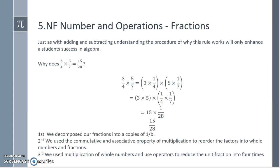So all in all, we decomposed our fractions into A copies of 1 over B, the unit fraction. We used the commutative and associative property of multiplication to reorder the factors into whole numbers and fractions. We used multiplication of whole numbers and used operators to reduce the unit fraction into 4 times smaller 1 7th.